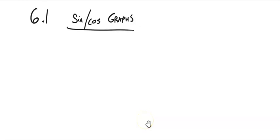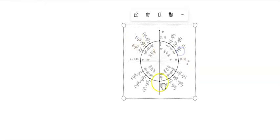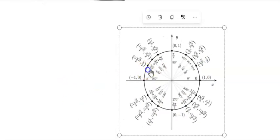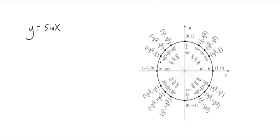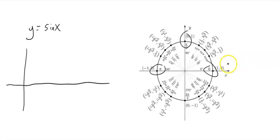Math 142, we're going to take a peek at section 6.1 and talk about the graphs of sine and cosine. As we think about those graphs, let's look at the unit circle to help us think about the shapes. For y equals sine x, I'm going to grab the major pieces: 0, pi over 2, pi, 3 pi over 2, and 2 pi, placing them at even intervals.